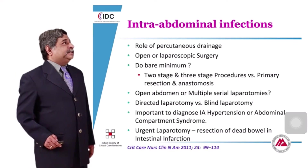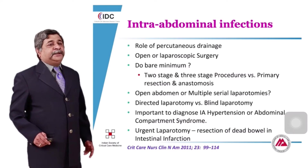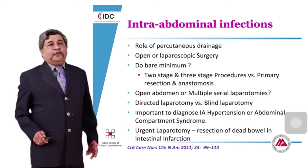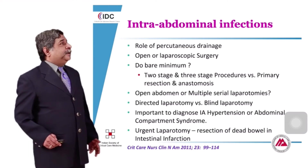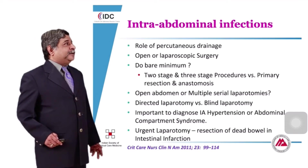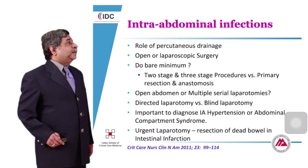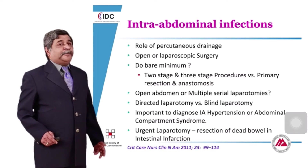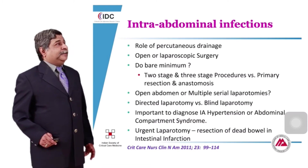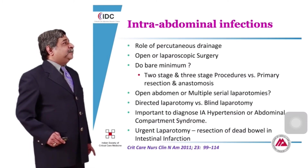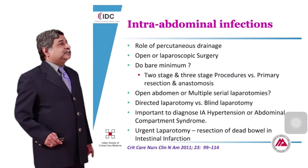Some controversial issues include: the role of percutaneous drainage — complete drainage is necessary to prevent immediate morbidity; whether to do open or laparoscopic surgery depending on extent; whether to do bare minimum with 2 or 3 stage procedures versus primary resection and anastomosis, depending on physiological stability; and whether to leave the abdomen open or perform multiple serial laparotomies. Remember to diagnose intra-abdominal hypertension or abdominal compartment syndrome, as this can cause multi-organ failure.